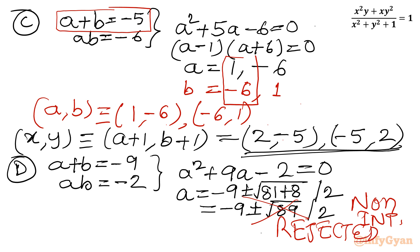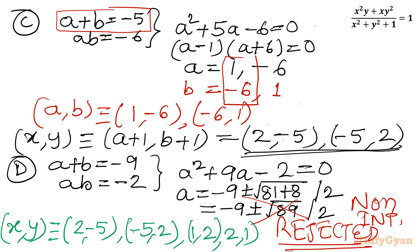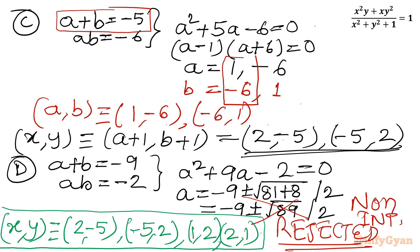Our final integer solutions are: (x, y) = (2, -5), (-5, 2), (1, 2), and (2, 1). These are all ordered pairs for the given Diophantine equation. I hope you enjoyed this video — don't forget to like, share, and subscribe. Bye-bye, good luck, and take care!